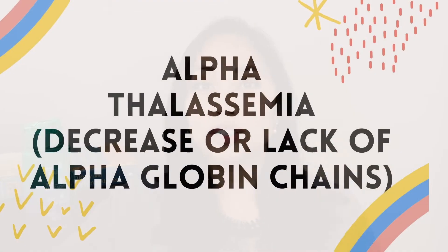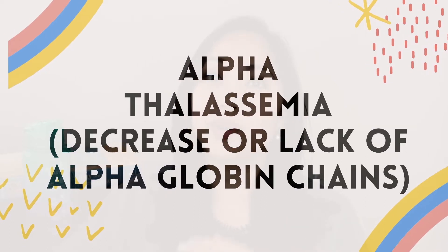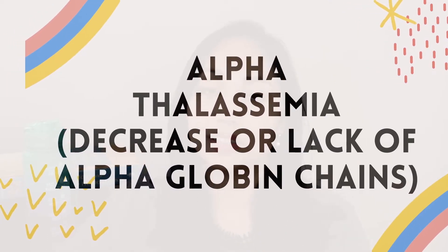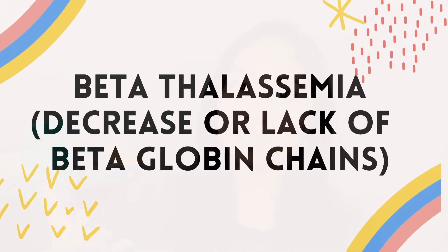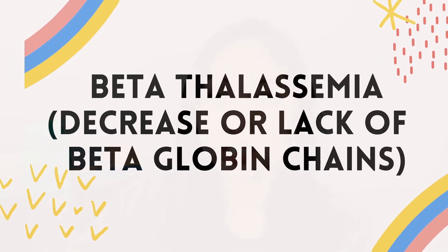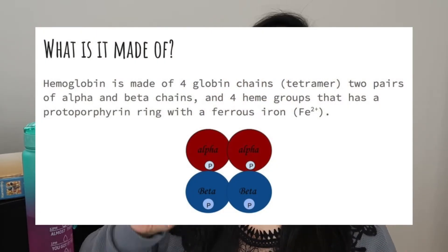Both names are derived from the lack, decrease, or absence of the specific globin chains. For alpha thalassemia, there is either a decrease or a complete absence of alpha globin chains, whereas for beta thalassemia, there is a decrease or an absence of the beta globin chains.